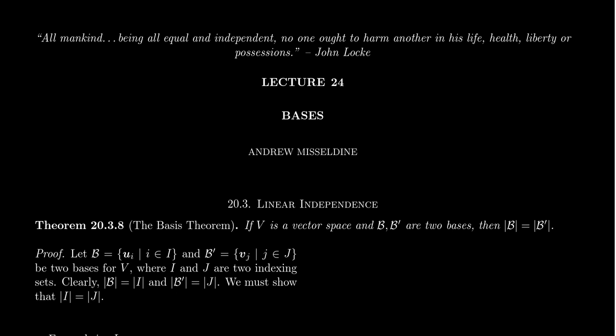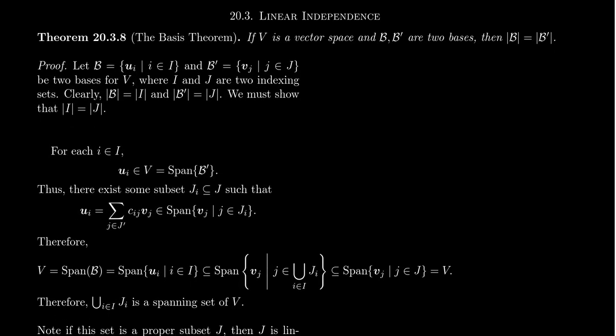As a reminder, in the previous lecture, lecture 23, we used Zorn's Lemma to prove the so-called expansion and pruning theorems. The expansion theorem told us that every linearly independent set of a vector space can be expanded into a basis; therefore bases exist. The pruning theorem tells us that any spanning set of a vector space can be pruned into a basis, which also gives us that bases exist. With the notion of a basis in hand, we define the dimension of a vector space to be the cardinality of a basis, and the purpose of the basis theorem is to prove that the notion of dimension is well-defined.